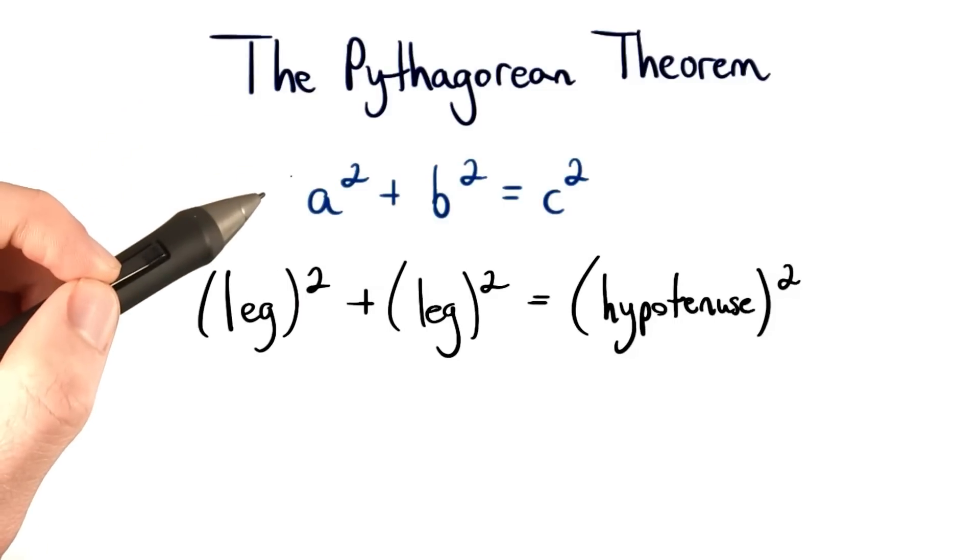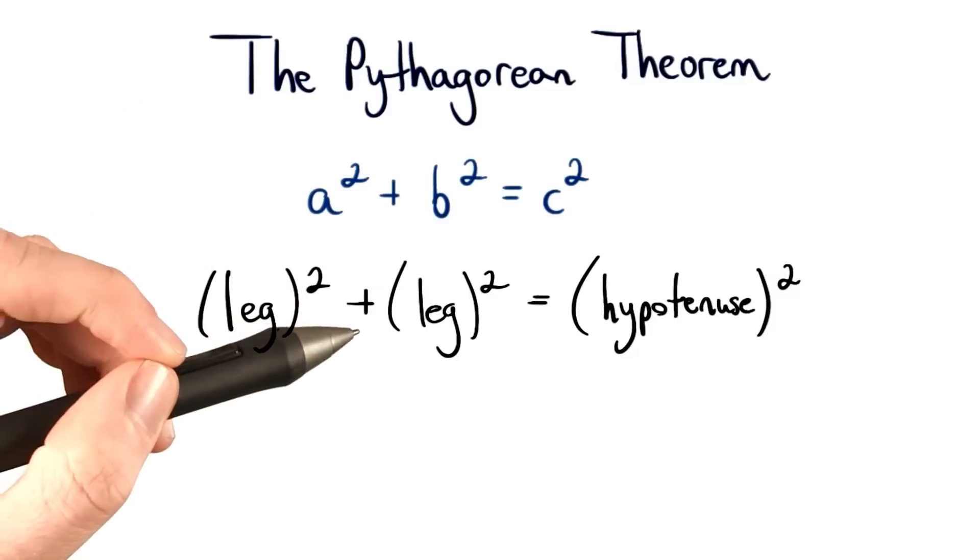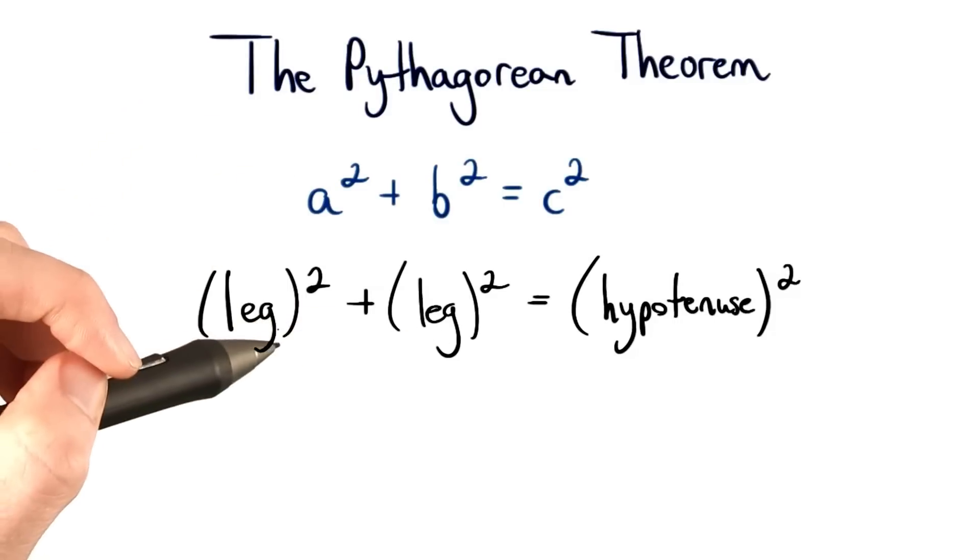So we said this works for any right triangle. We can square the leg, square another leg, and add those together to get the hypotenuse squared. But why does this work?